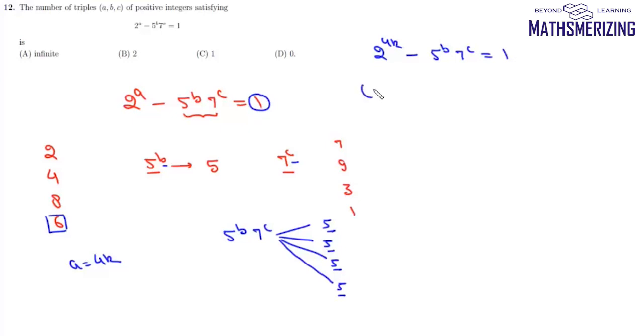Now we can write this 2 as 3 minus 1 to the power 4K minus we can write this 5 as 3 into 2 minus 1 to the power B and we can write this 7 as 3 into 2 plus 1 to the power C and it will be equal to 1.